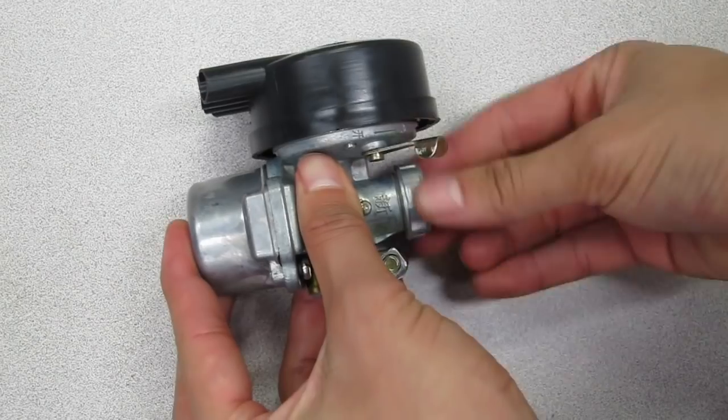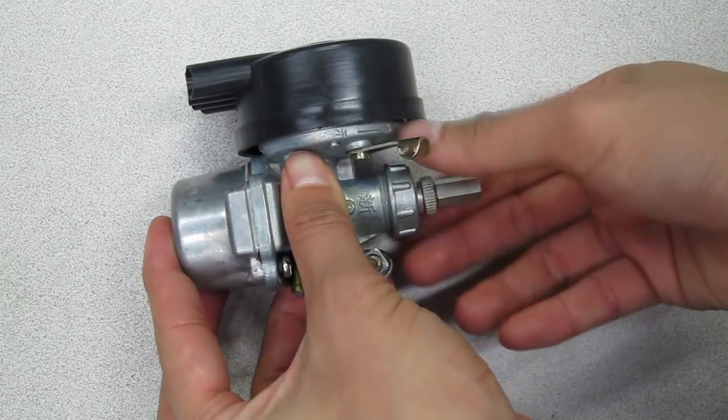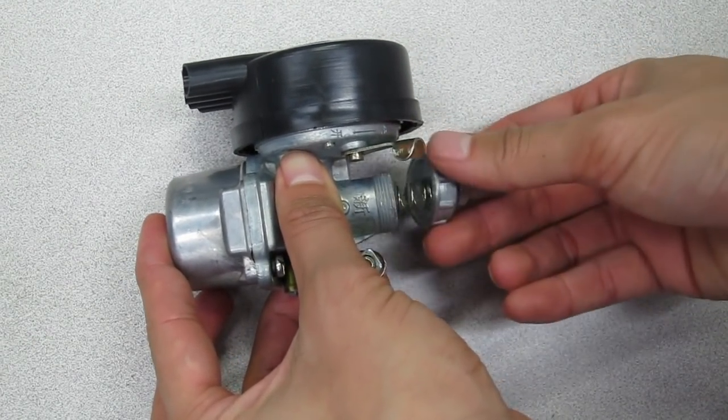Step 1. Unscrew the carburetor right here. Remove all the components from the carburetor.